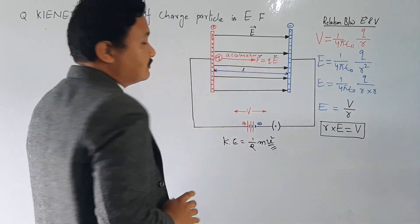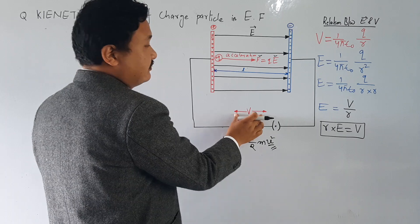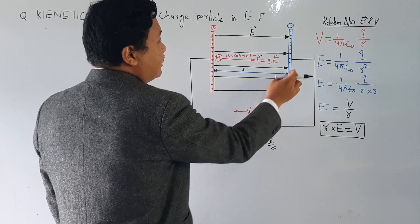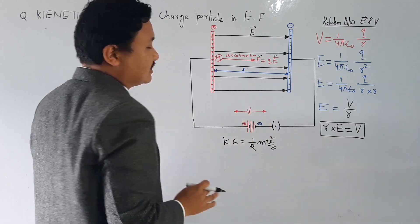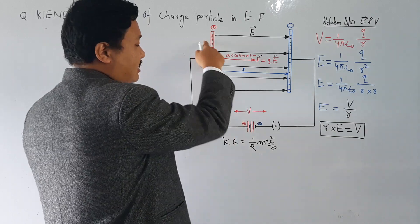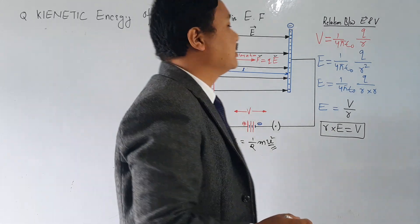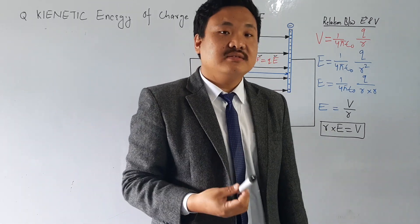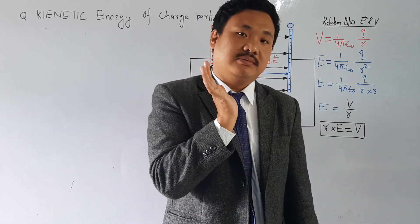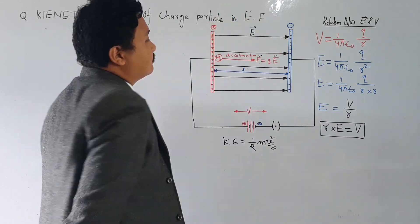So this is the system. There is a battery with potential V. Connected to the positive terminal is one plate and connected to the negative terminal is another plate. Because of this, one plate is positively charged and the other is negatively charged. There is an electric field between the two plates going from the positive plate to the negative plate.